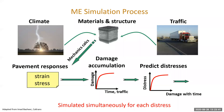Now an example: mechanistic empirical pavement design takes climate, materials, structure, and traffic inputs, runs mechanical simulations of how the pavement damages under climate and traffic — based on strains and stresses, giving us damage. That's the mechanistic part. We then need to make sure those match reality. At this point, we're not purely mechanistic — we need empirical transfer functions to predict distress from damage, simulated simultaneously for each distress type.